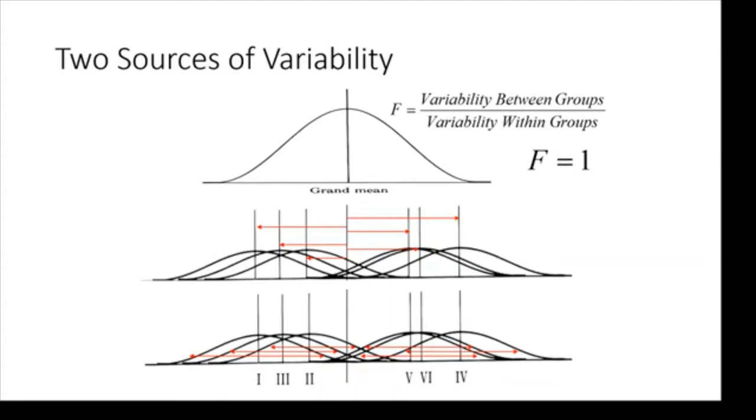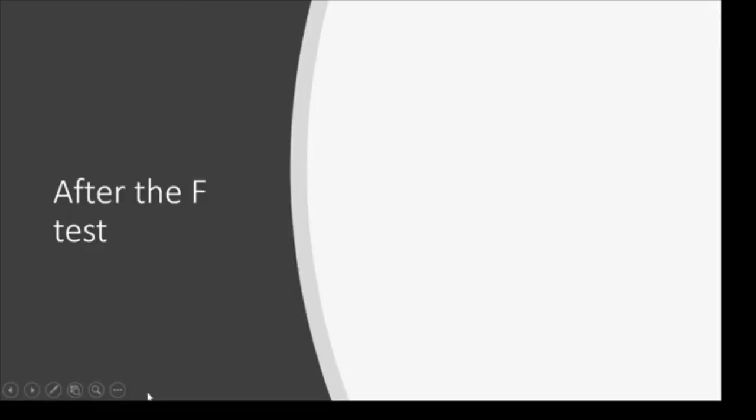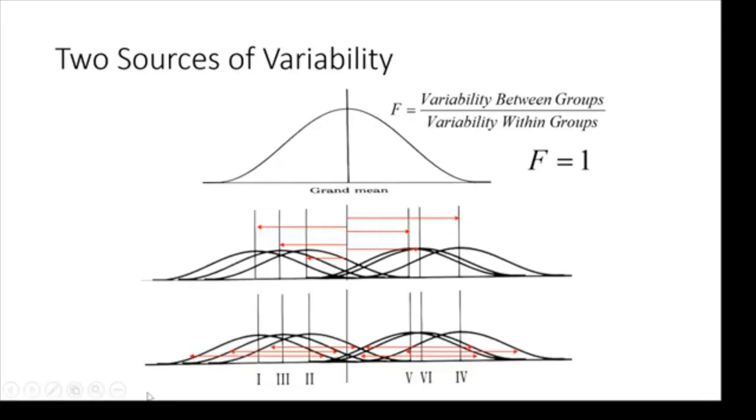But because there's so much random within variability in the denominator, that makes us lose the effect that we see in the between group variability. And the ratio becomes about 1 and tells us that there isn't really anything that we can say about there being a significant difference.